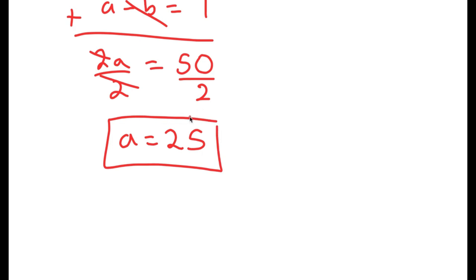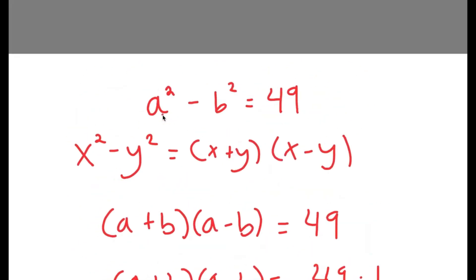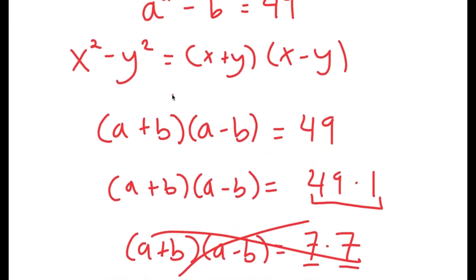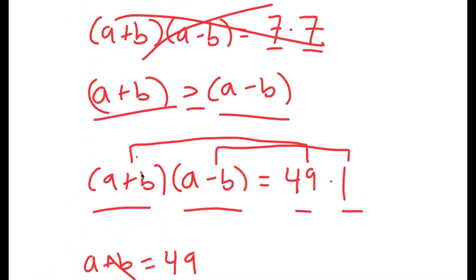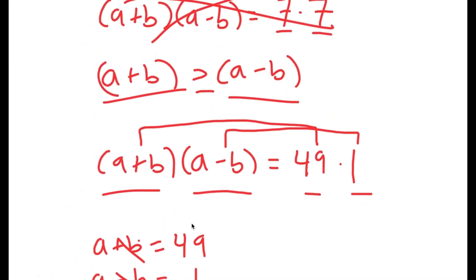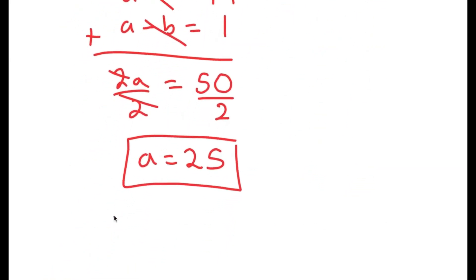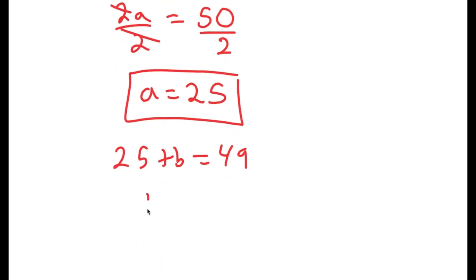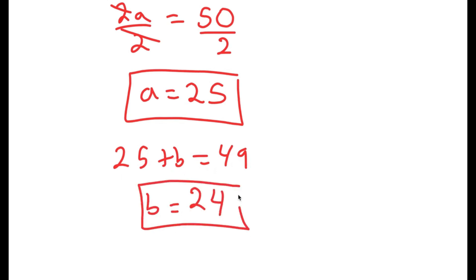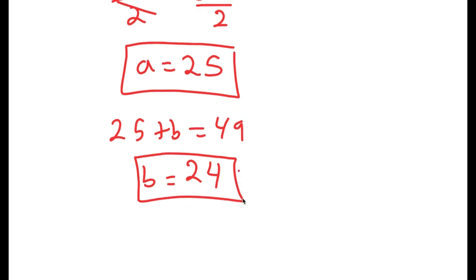Now that we know that a is equal to 25, remember that a plus b is equal to 49. So this means that 25 plus b is equal to 49, and b is equal to 49 minus 25, which is 24. So a equals 25 and b equals 24.